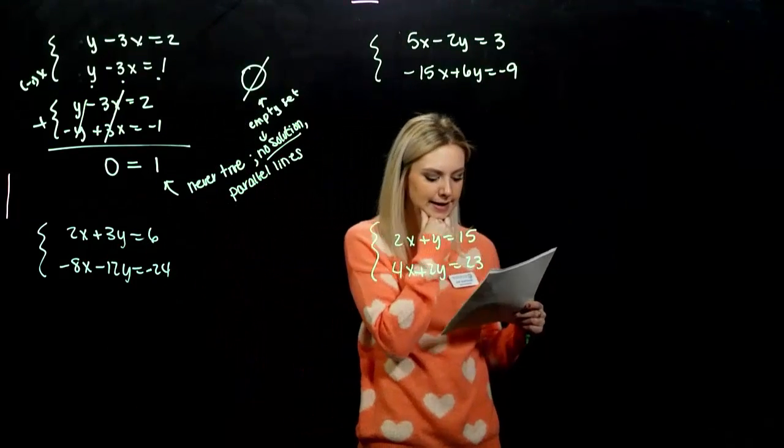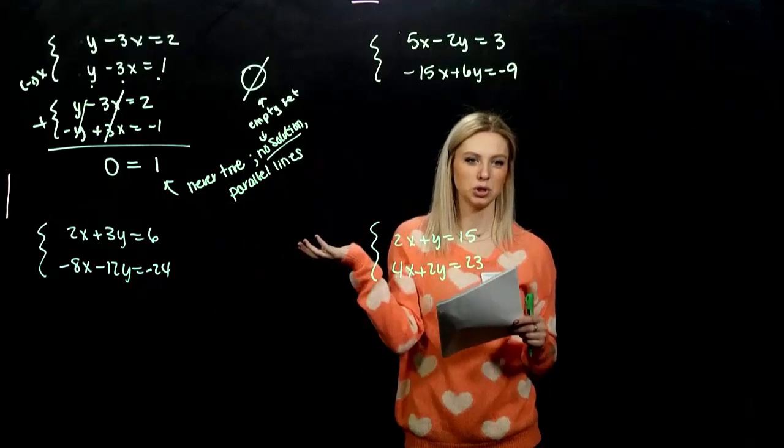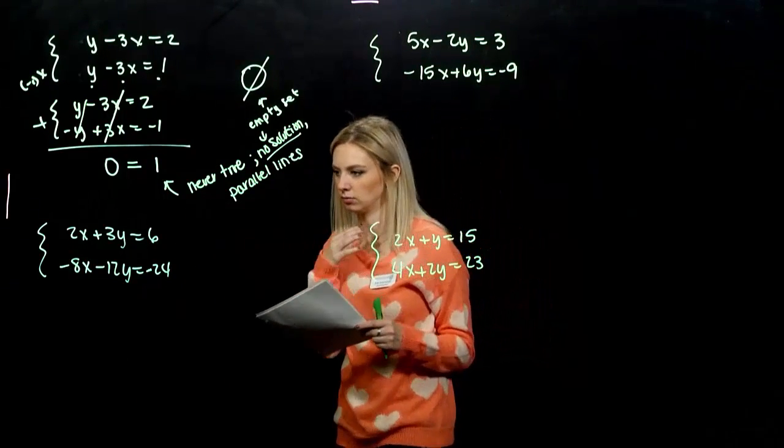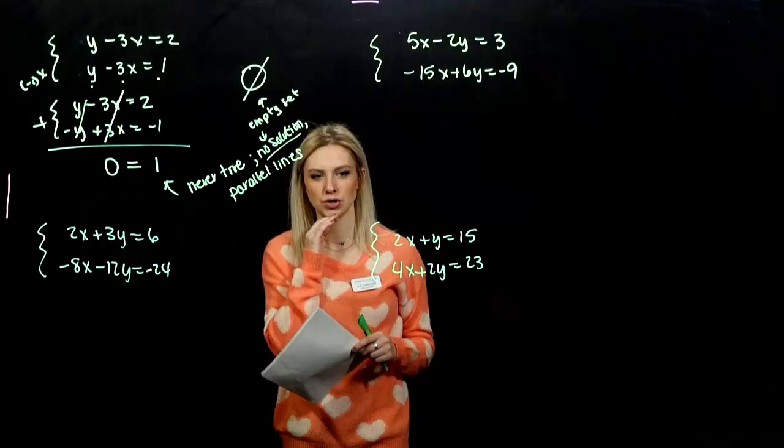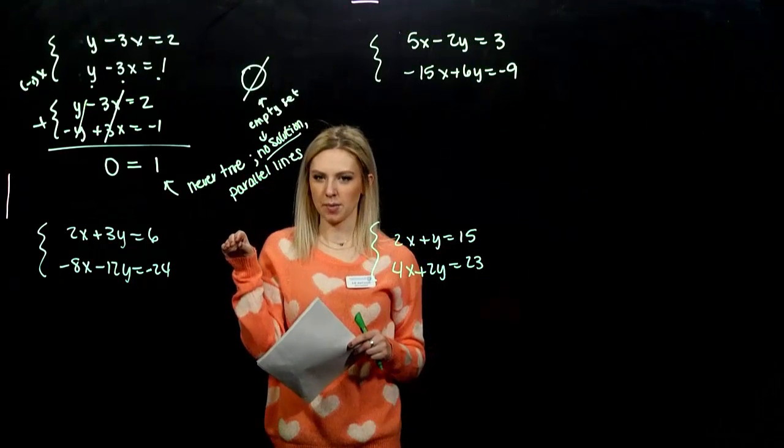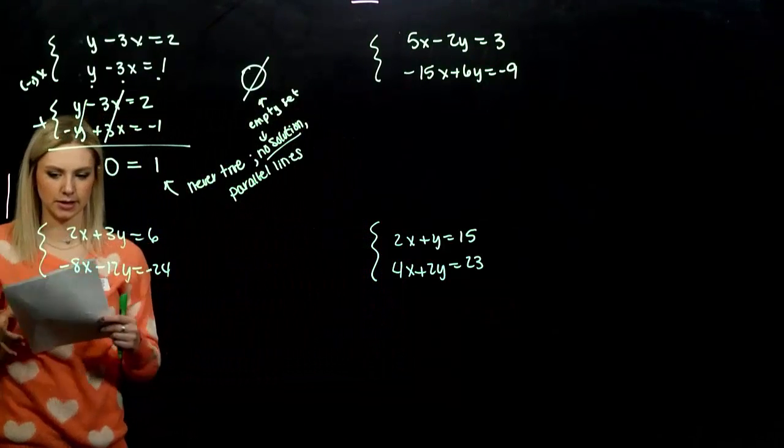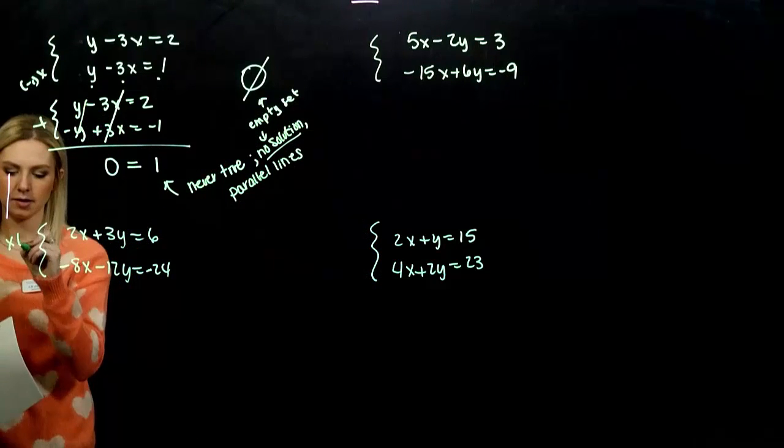In the second case, let's say I want to work towards eliminating x just so we're all on the same page. You could eliminate y, you'll get the same result. I'm going to eliminate x. So, what do I need to alter? If I'm going to alter the first equation, it's going to be by a factor of what? Four. So, I can have opposites here.